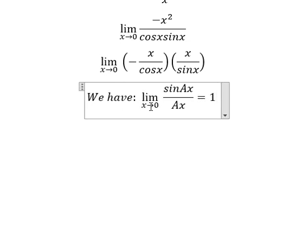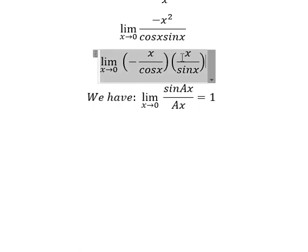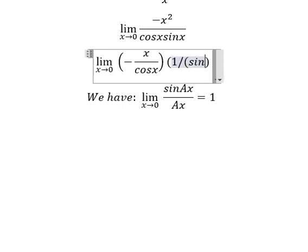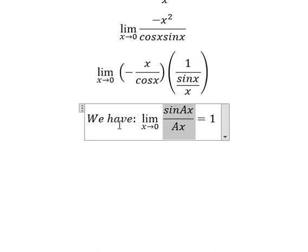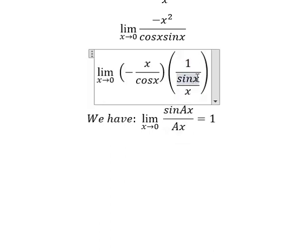We have the formula: when x approaches zero, sin(ax) over ax equals one. For this one we have x over sin x, we can put into one over sin x over x. So this one is similar. Coefficient of x that is a equals one.